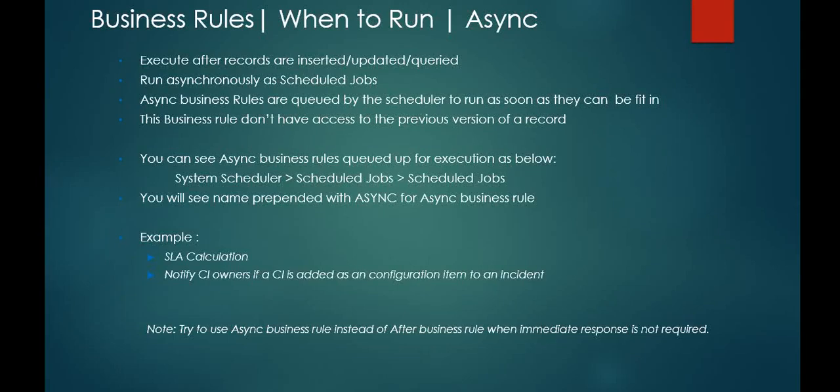In this video we are going to learn and discuss about async business rules. Async business rules execute after a record is inserted or updated. They run asynchronously as a scheduler — async business rules are queued up by the scheduler to run as soon as they can be fit in. These business rules don't have access to the previous version of a record; basically, the previous object is not available in an async business rule.